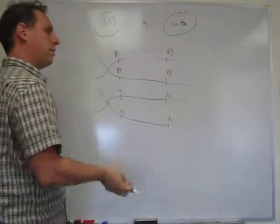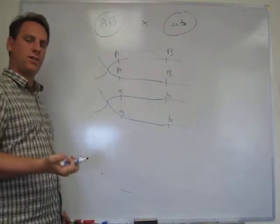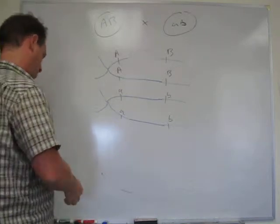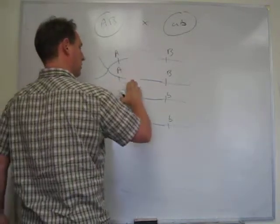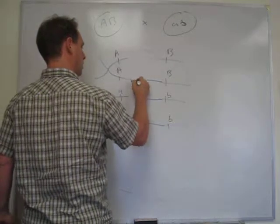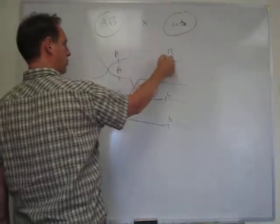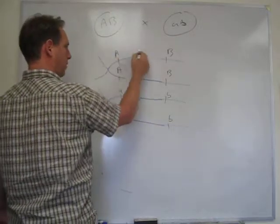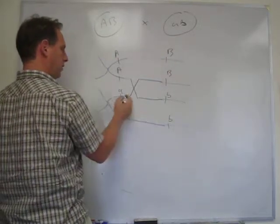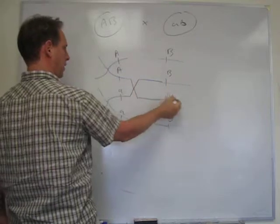So what type of tetrad is produced by a single crossover? Well, then this would produce a tetratype because you would then have this particular combination, big A, big B, little a, little b, and then little a, big B, and then big A, little b.